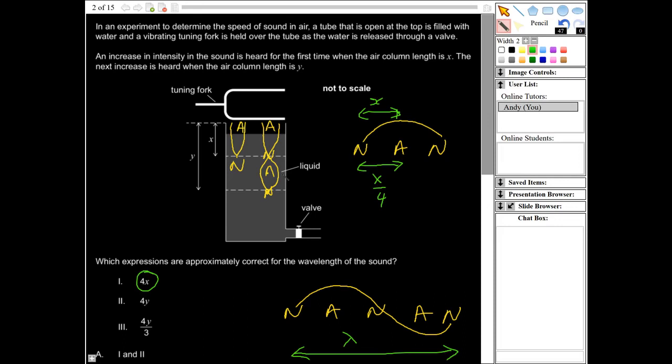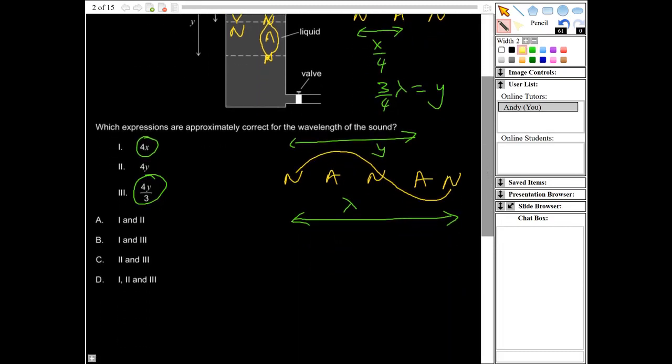In the case of Y, we've got three quarters of the wavelength. So three quarters of lambda would be equal to Y. Because Y would be that distance there. So lambda would therefore be four Y over three, this one here. So option one would be possible, option three would be possible, option four would not be possible, because the next one after that would be five fourths of a wavelength, and that's not going to work. So the correct answer then is going to be B, one and three only.